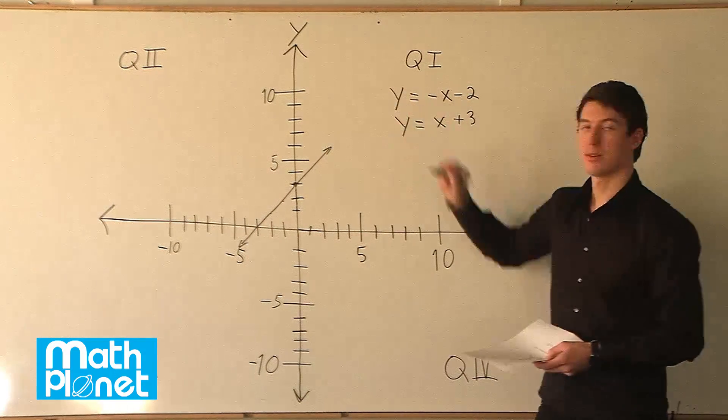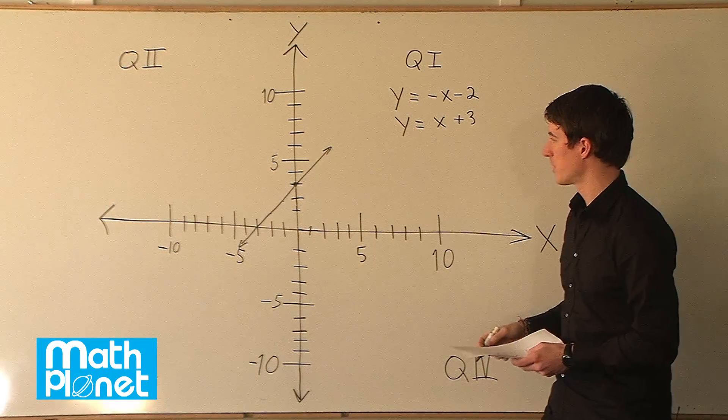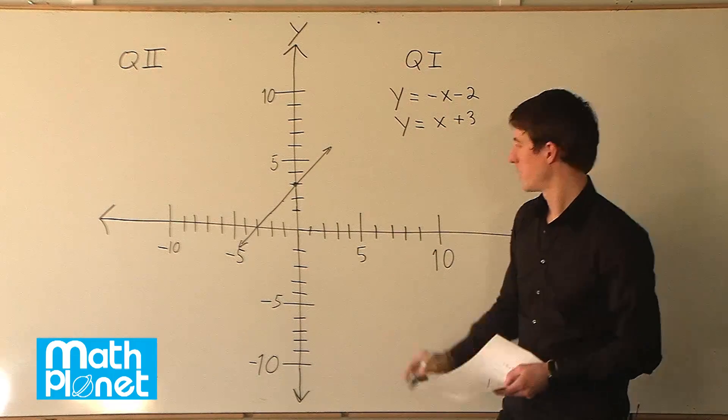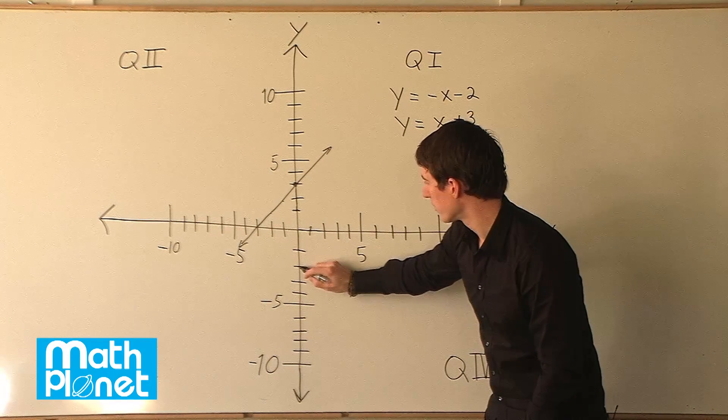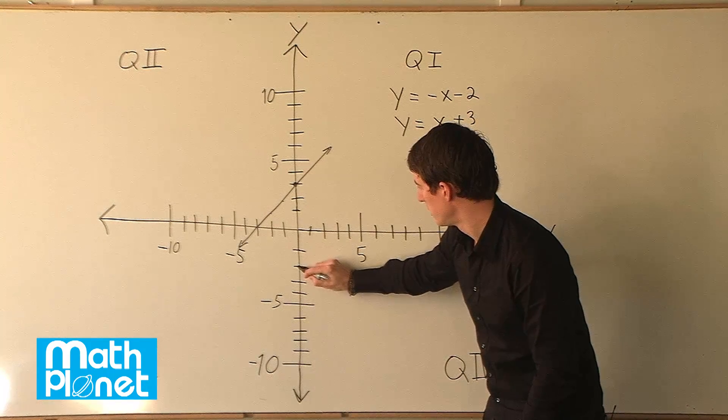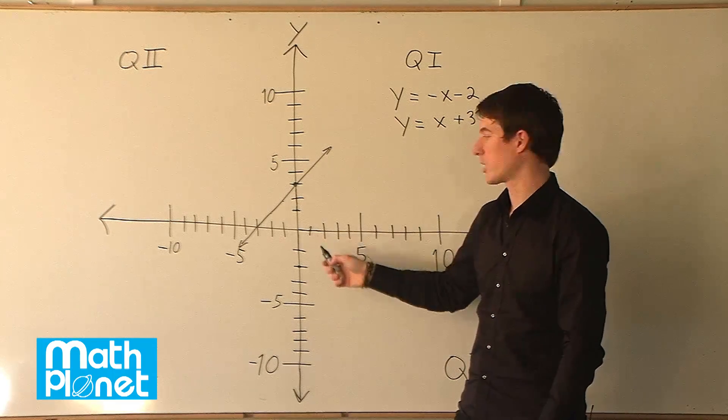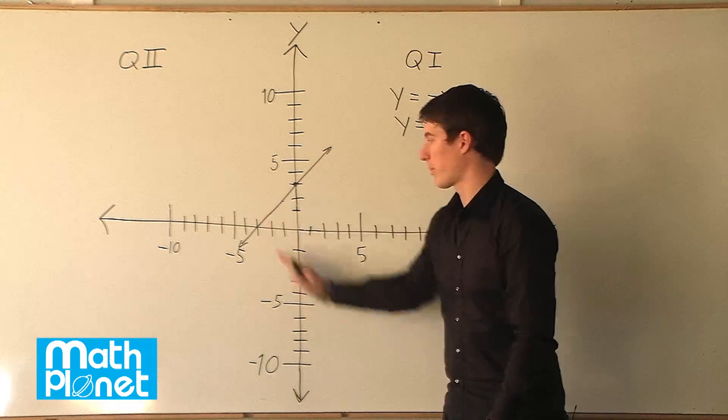Now one more line and then we can see where they intersect. So we have the slope of negative one and a y intercept of negative two. So we again begin at negative two right here. And now in this case we have a negative slope. So instead of going up to the right, it goes down to the right. So it looks something like this.